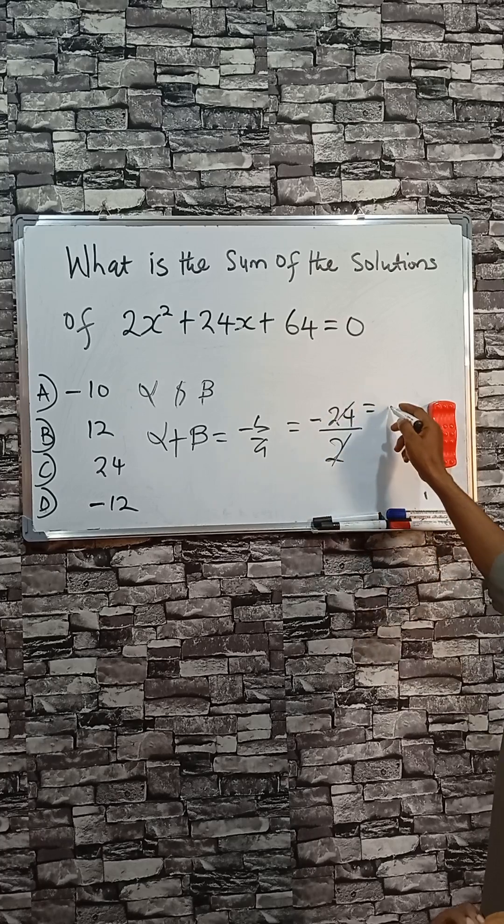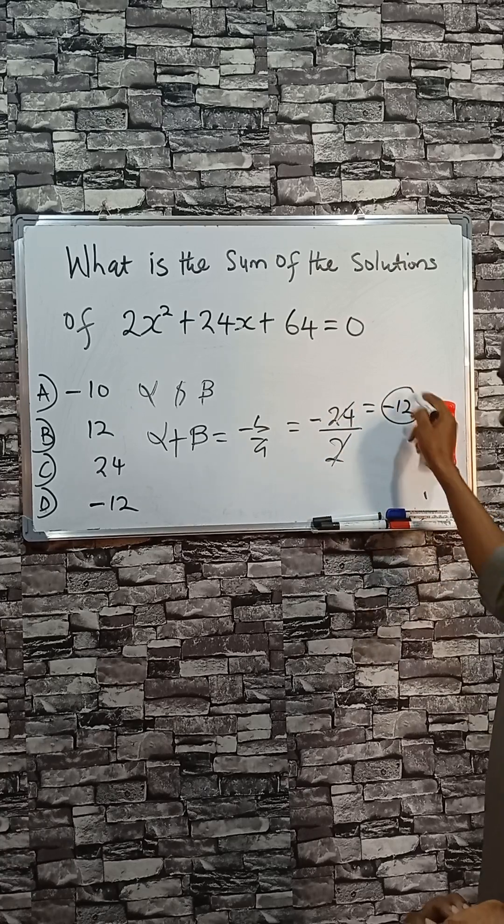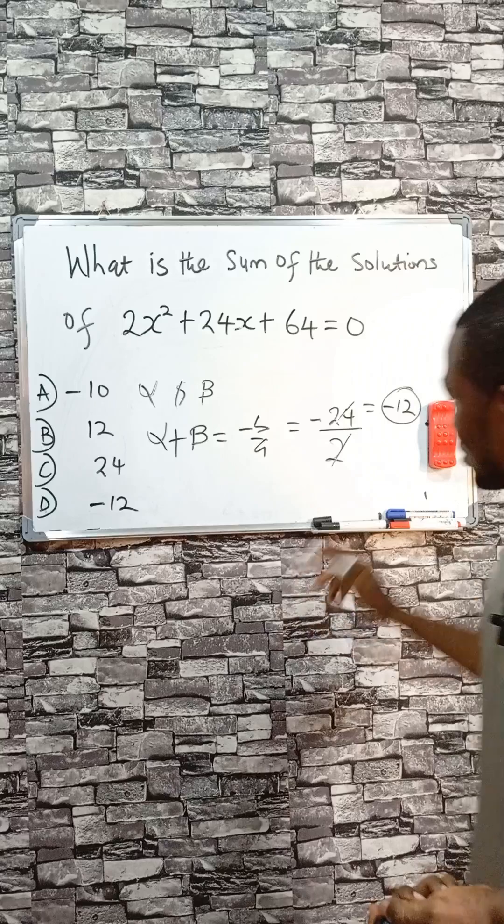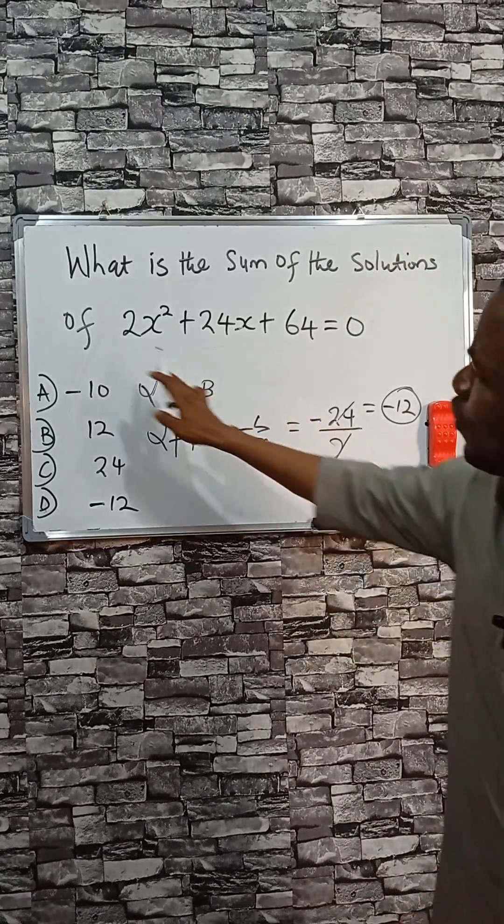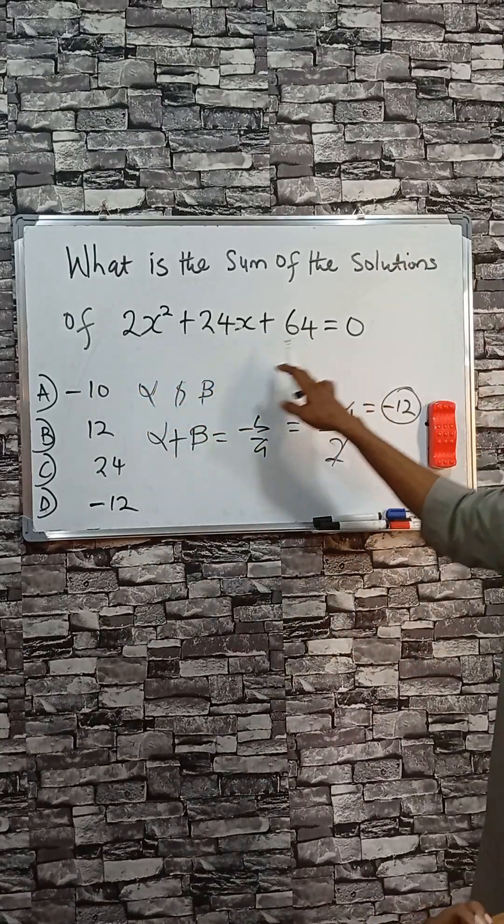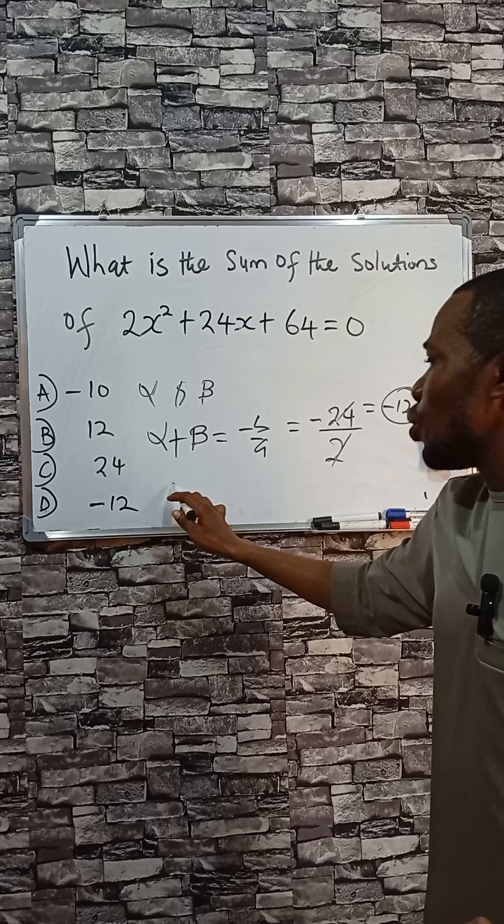So this divided by this will give you minus 12. So now this is minus 12, but if you are factorizing this or using some lambda to solve this, you will have x as minus 4 or minus 8.